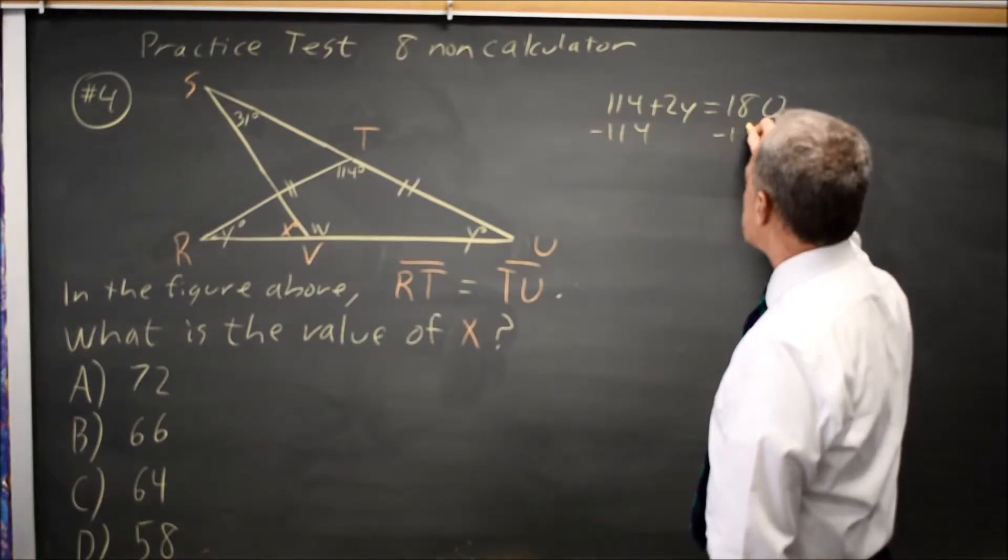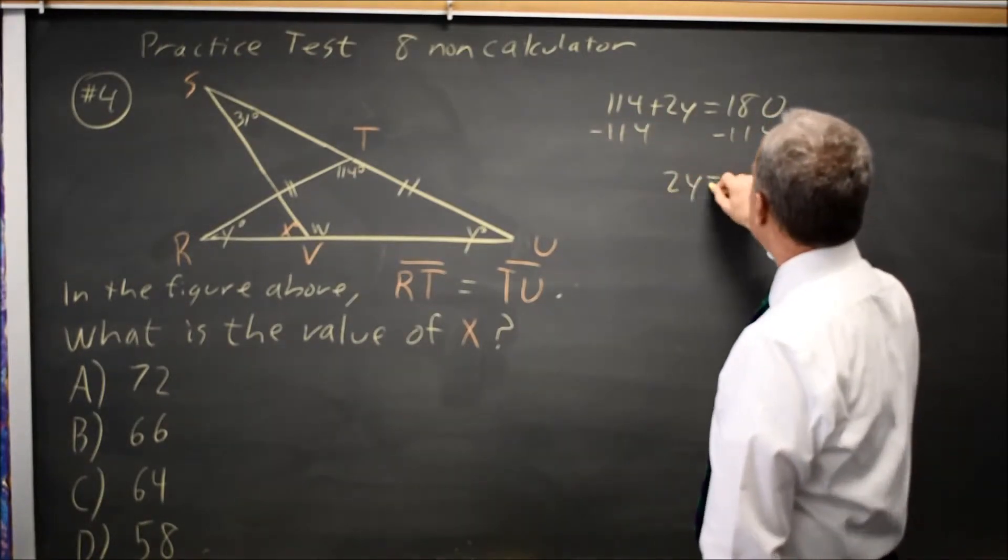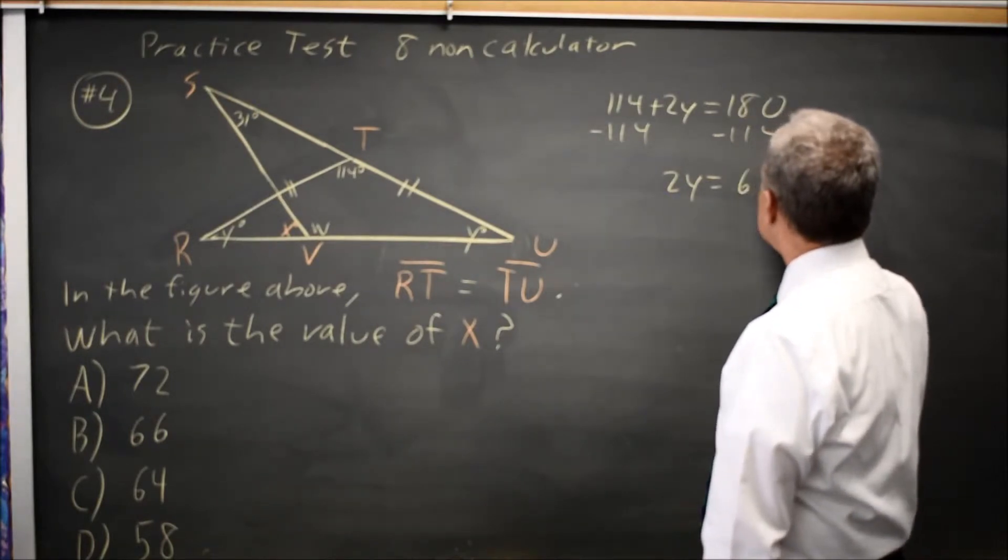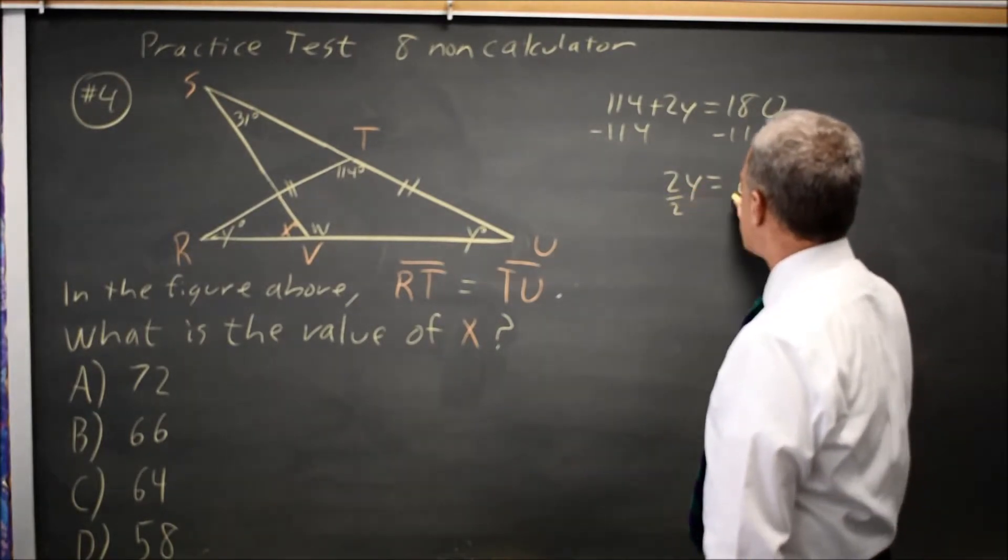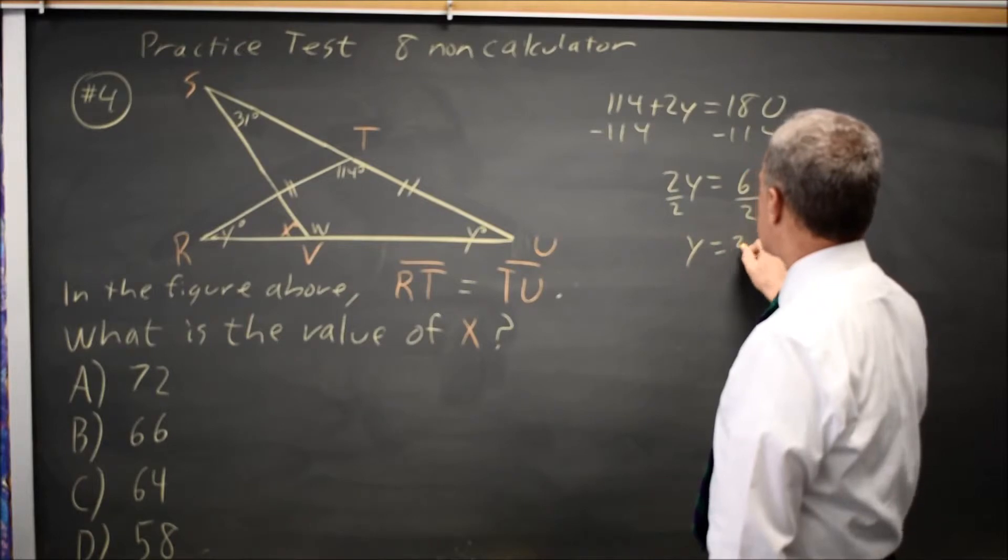Subtract 114 from both sides and I get 2Y equals 66. Divide both sides by 2. Y equals 33.